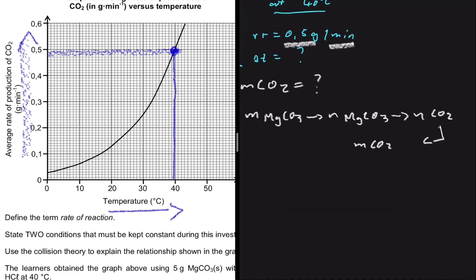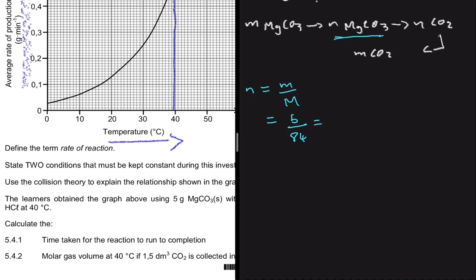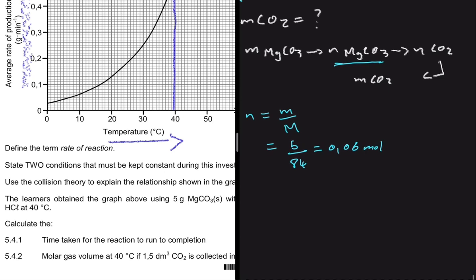We have the mass of MgCO3, so we find the number of moles: moles = mass ÷ molar mass = 5 g ÷ 84 g/mol, which gives approximately 0.06 moles of MgCO3.